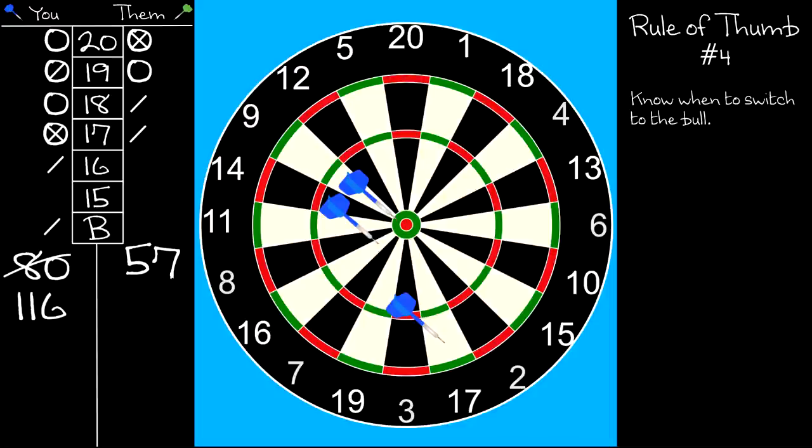Another example where you might consider throwing at the bull early is if your opponent gives you a free round. By that I mean if your opponent fails to score with all three of their darts on their turn. It's like having a free turn for you. So if you are already in a good position, you might just try three at the bull. Even if you miss, the fact that you threw at it could unsettle your opponent.